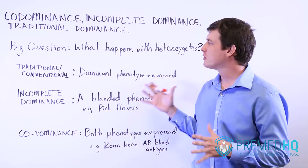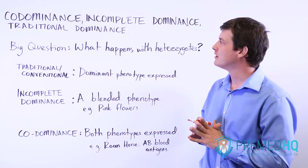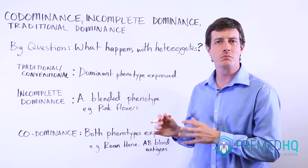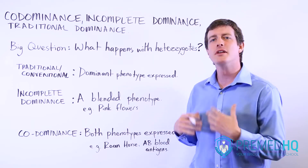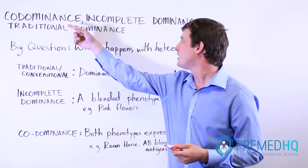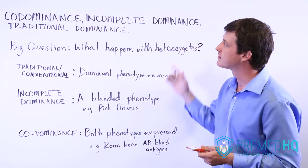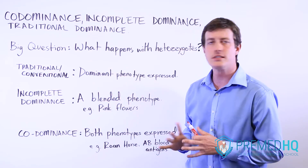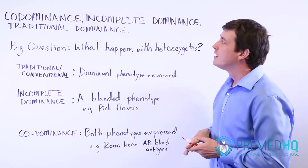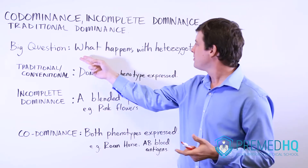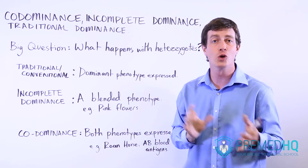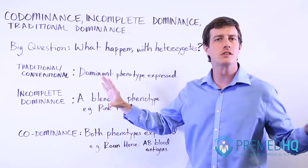Oftentimes genes and the traits they express follow the traditional dominant versus recessive pattern, where if the dominant allele is present, that's the phenotype that shows. But there are also cases of co-dominance or incomplete dominance. We'll go through the three different types and how you can distinguish between them phenotypically. The big question with all of these is what happens with the heterozygotes, because if something is homozygous for a dominant or recessive trait, it will just display that phenotype.